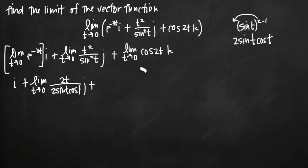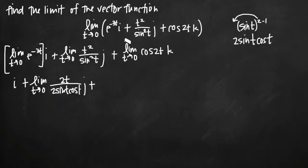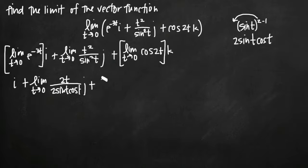For the coefficient on k, cosine of 2 times 0 is cosine of 0, which equals 1. So the limit as t goes to zero of cosine of 2t just becomes 1. We get 1k, or just k. So i and k simplified really easily — we just need to go back to our j component.